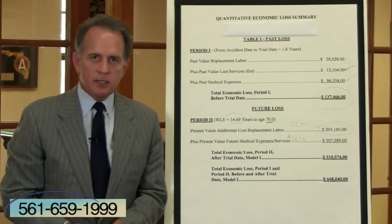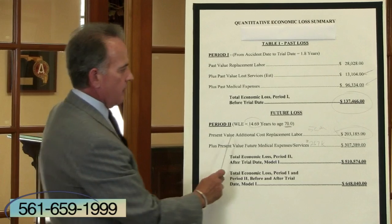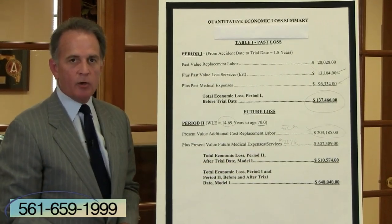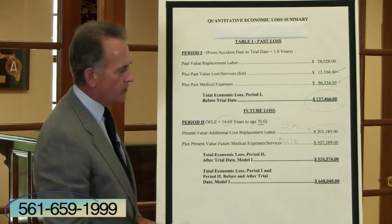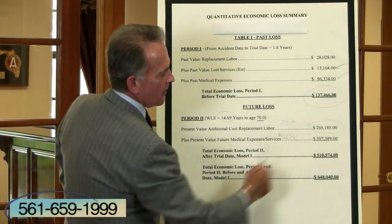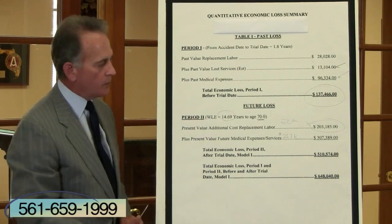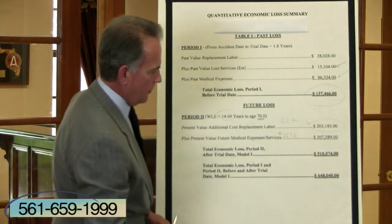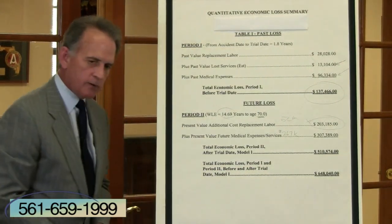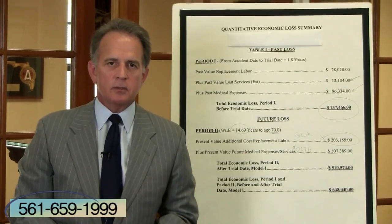Now the economist takes out his crystal ball and crunches the numbers as far as what this person is going to need in the future. He did a very conservative calculation, only taking the individual up to age 70, whereas most people really live longer than that — just to be conservative and fair on all sides. The present value of the loss of labor in the future: $203,185. The present value of future medical expenses — to compensate him for what he's going to incur in the future: $307,389. If you add up both the past and the future, you come to a total of $648,040. That might sound like a lot of money, but it's basically a scientific calculation that leads to that number.